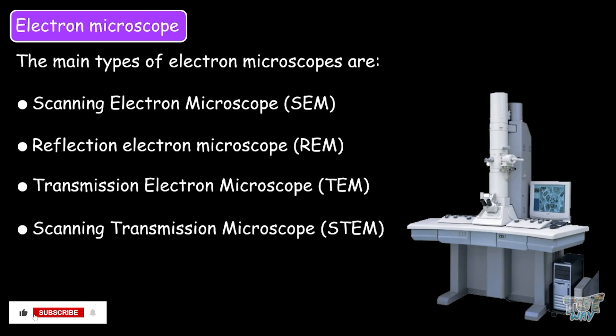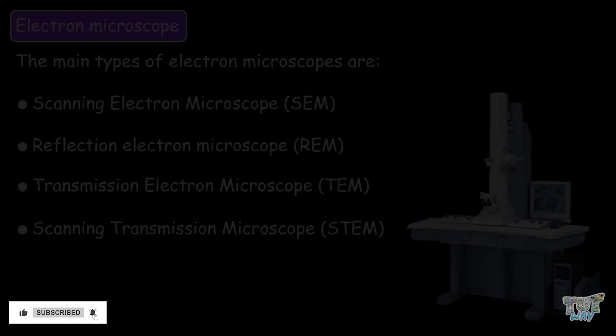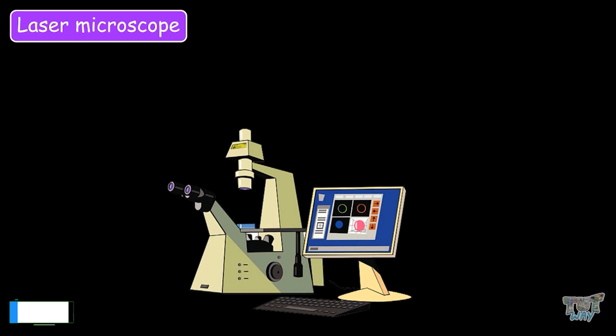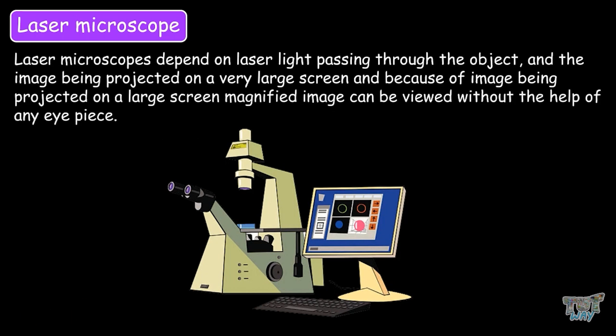There is one more type of microscope that exists: the laser microscope. The laser microscope depends on the laser light passing through the object and the image being projected on a very large screen. And because of the image being projected on this large screen, the magnified image can be viewed without the help of any eyepiece. So these are all the advanced types of microscopes.